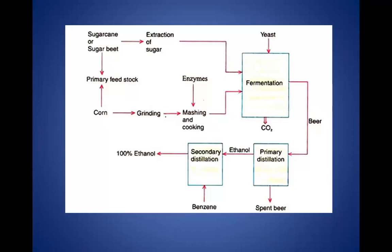The process can use sugar cane, sugar beet, or many other raw material sources as primary feedstock. In the case of corn, it goes through grinding, mashing, and cooking; for sugar cane or sugar beet, extraction of sugar is first done. The material then comes to the fermentation unit where yeast is added. Once fermented, the beer goes for primary distillation, then secondary distillation to obtain 100% ethanol or absolute alcohol.